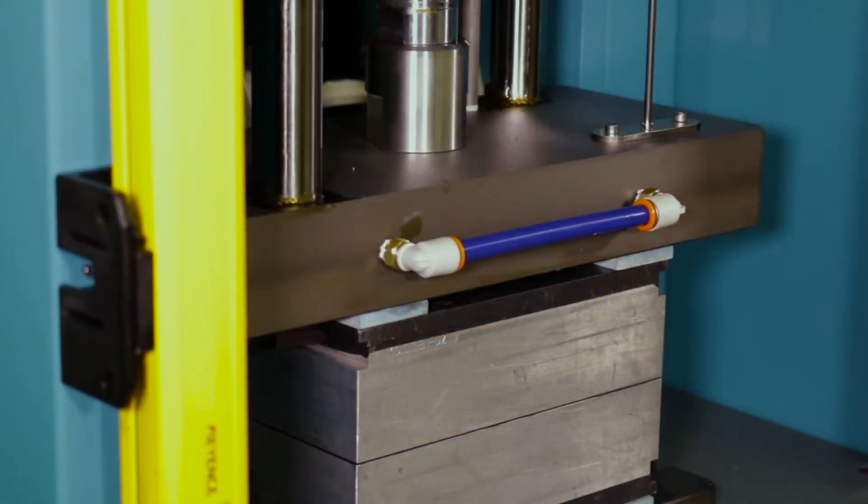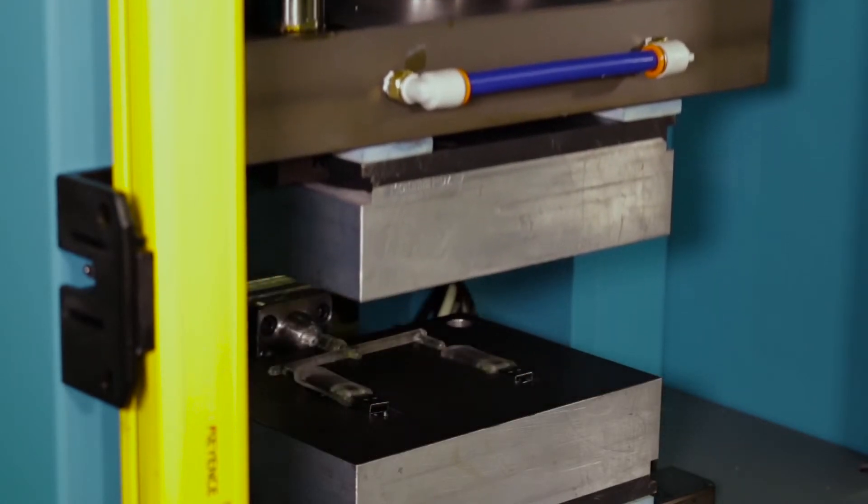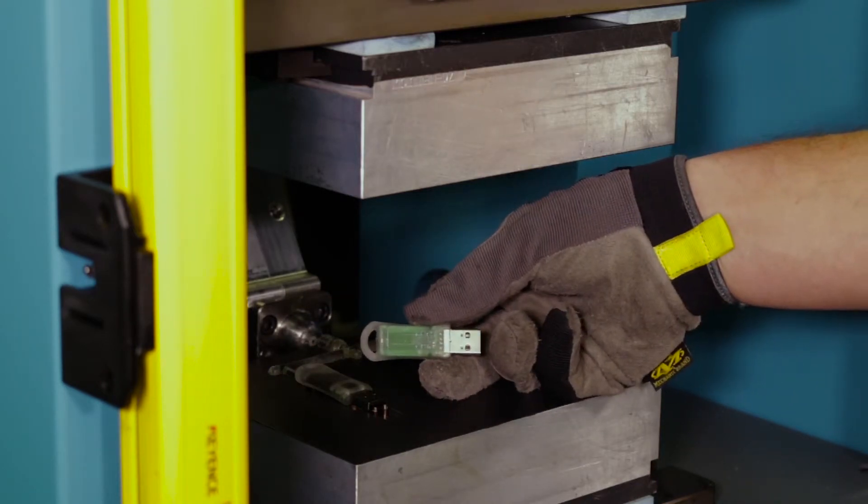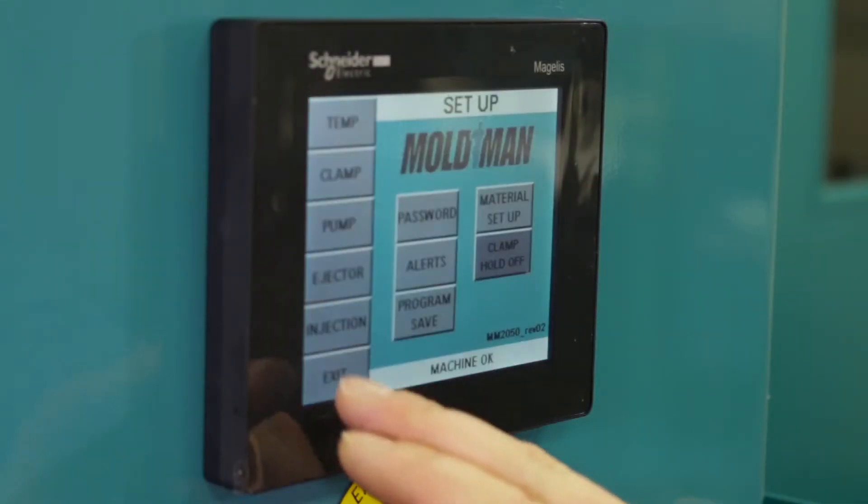With an injection rating of up to 2,000 PSI and a 50-gram shot size, the Moldman 2050 is capable of processing a wide range of viscosities up to 700,000 centipoise and allows for different material ratios with simple touchscreen adjustments.